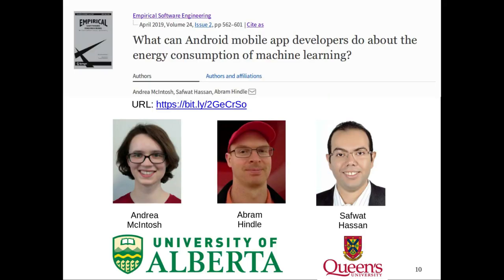We were really concerned about this, so we wrote a paper: 'What can Android mobile app developers do about the energy consumption of machine learning?' This was mostly worked on by Andrea McIntosh, who now works for Google, and I was supervising her at the time. Safwat Hassan, who recently graduated from Queen's University from Ahmed Hassan's lab, helped us determine the adoption of machine learning.